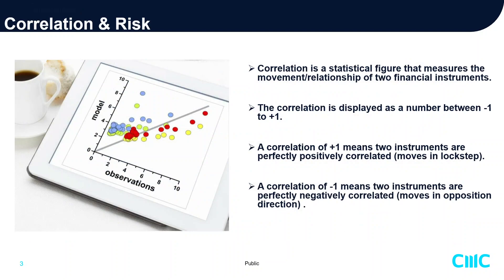In Part 3 of the Risk Management Tactics, we'll be focusing firstly on correlation and risk. Basically, what is correlation? Correlation is a statistical figure that measures the movement and relationship of two financial instruments. The correlation is displayed as a number between a minimum of negative one to a maximum of positive one.